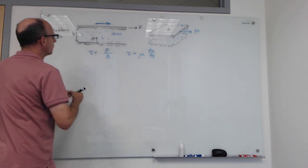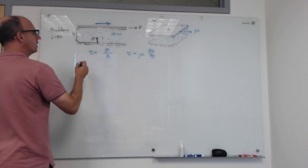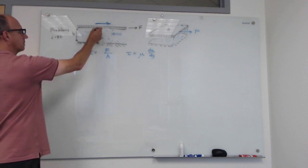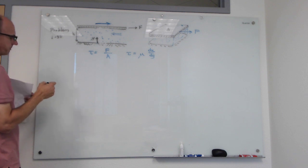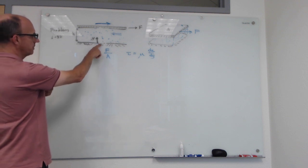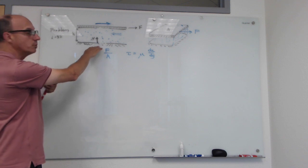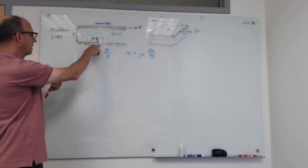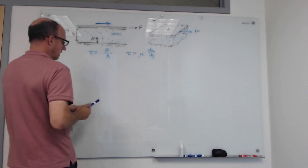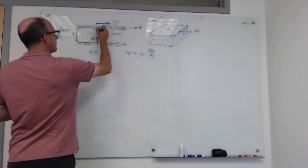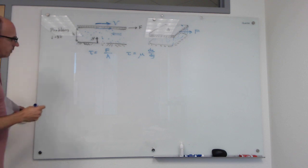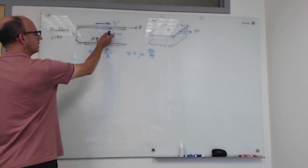I've written the y dimension pointing upwards, so as we move upward y is increasing. At the bottom, y equals zero; at the top, y equals H. When y equals zero we're on the bottom surface, which isn't moving, so the velocity of the liquid there is zero. By the time you get to the top surface, it's moving to the right at speed V, so the liquid there is also moving at speed V.